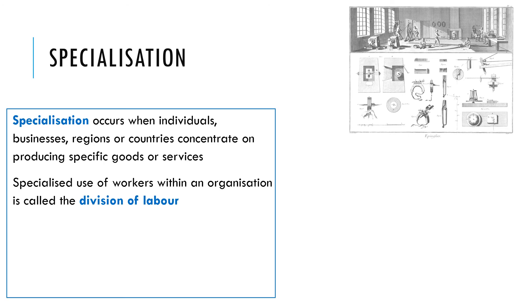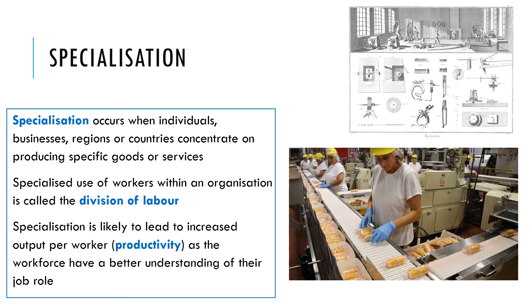Specialization involves the division of labor where workers within an organization focus on one specific task and become very efficient and productive at doing that task, so overall levels of production and quality improve. As the workforce develops a better understanding of their job role, it leads to an increase in productivity and an increase in output per worker.